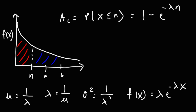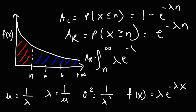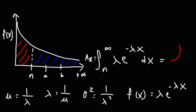Now if we want to find the area to the right of n — the probability that x is greater than or equal to n — it's equal to e to the negative lambda n. You can prove it using integrals by integrating from n to infinity of lambda times e to the negative lambda x dx. For the rest of the formulas for the exponential distribution, and also for the standard normal distribution, feel free to check out the formula sheet in the links below. Thanks again for watching.